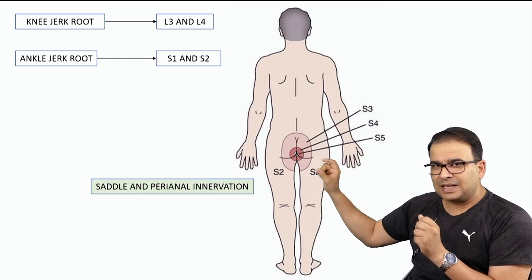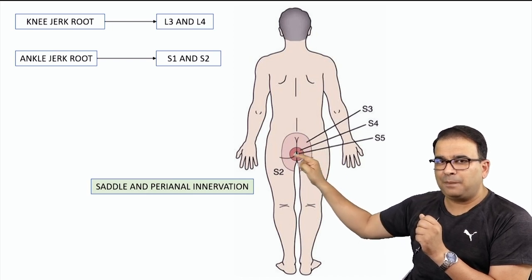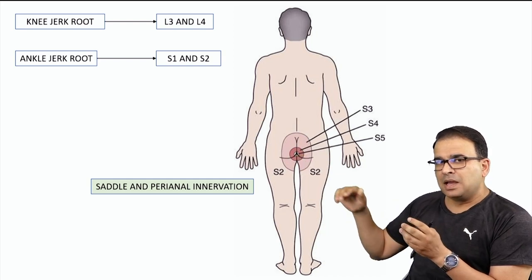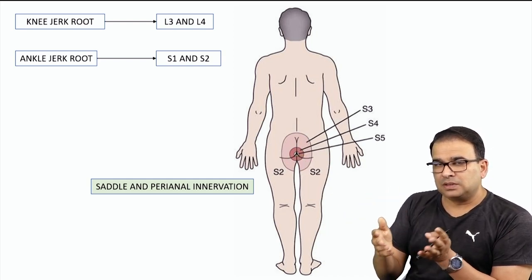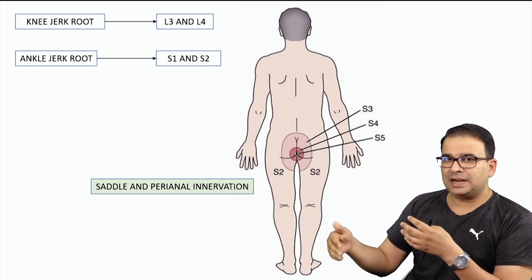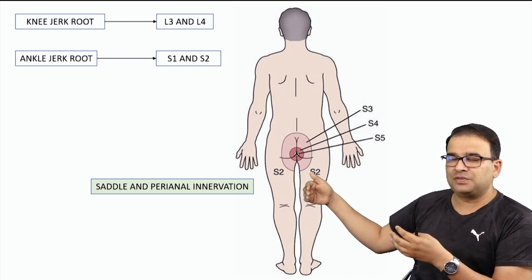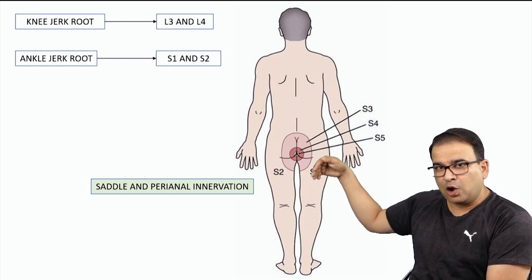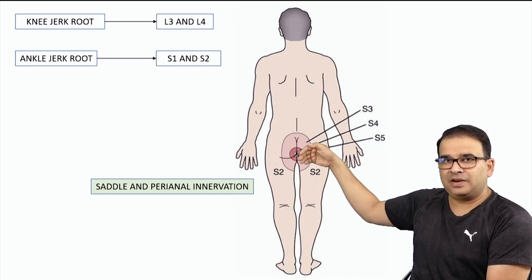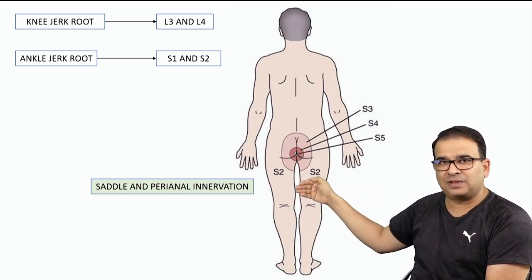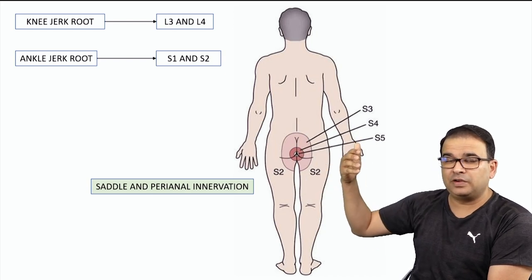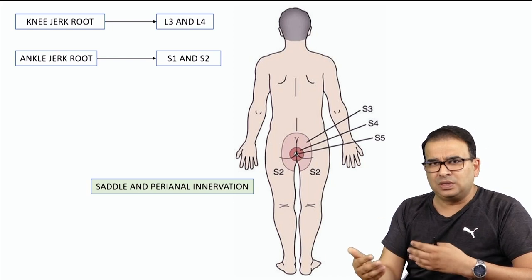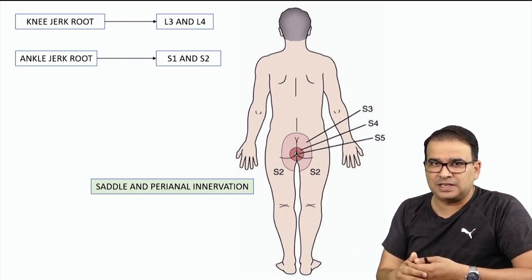In conus medullaris syndrome, there is precise sacral involvement, so the sensory loss is more of a perianal anesthesia because S4 and S5 supply around the anal canal. But in cauda equina syndrome, more nerves are involved, including lower lumbar nerves, so the sensory loss extends along the medial aspect of the thigh and because of higher lumbar nerve involvement, it can extend to the pubic region, including the glans and the clitoris.